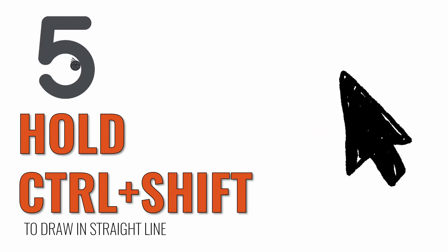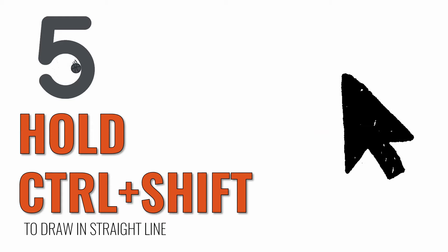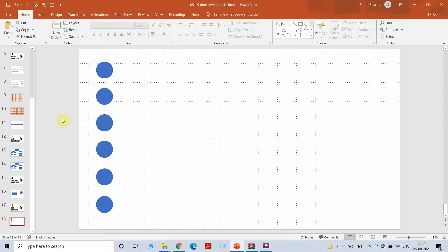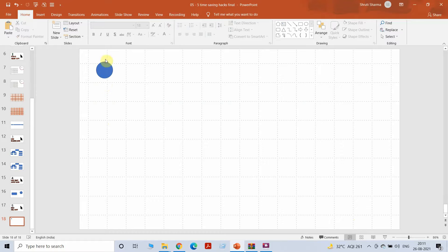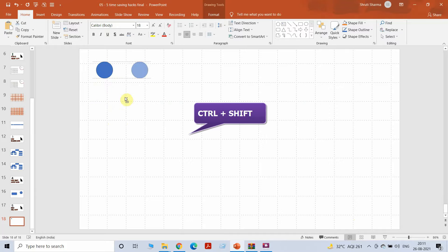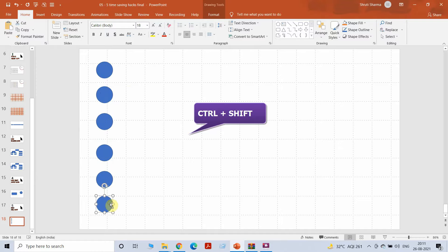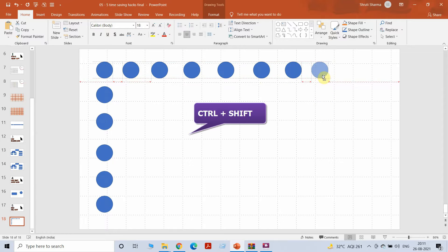Now coming to our last tool: how to use Ctrl+Shift to make sure that you draw or move in a straight line. This is a tool I swear by. If I want to draw circles in a straight line, normally I make a copy using Ctrl+C and then align them. But a simpler way: press Ctrl+Shift and make a copy — it will automatically stay in a straight line. Even if you try to move it, it will only go in a vertical or horizontal straight line. You can make as many copies as you want just by pressing Ctrl+Shift, and it cannot move in any other direction.